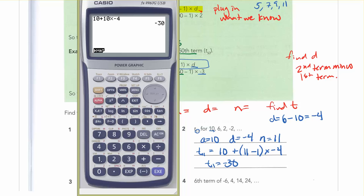But you can always just do it the whole way through if you want. 10 plus, bracket, 11 minus 1, bracket, times negative 4. And you'll still get negative 30. So either way.